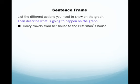Darcy travels from her house to the Peterman's house. Distance from home increases. The segment will slant blank.